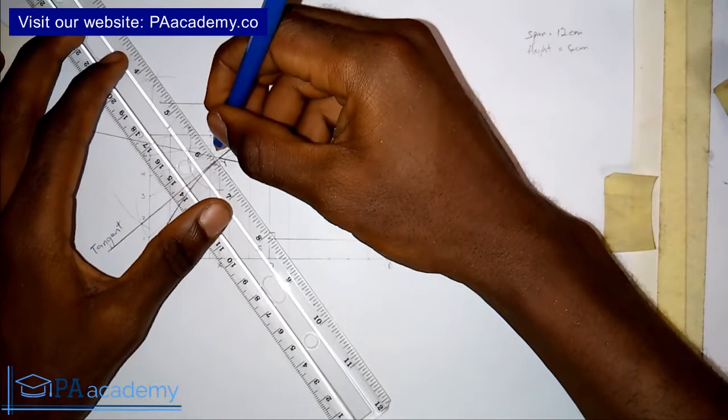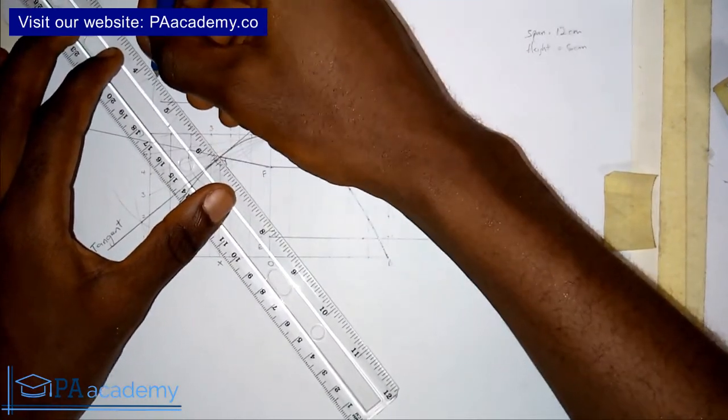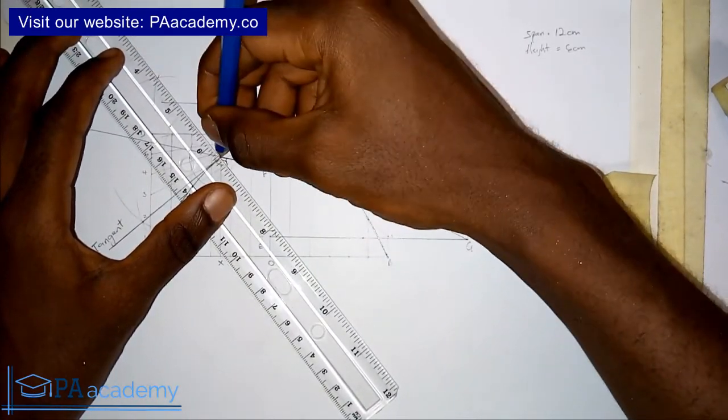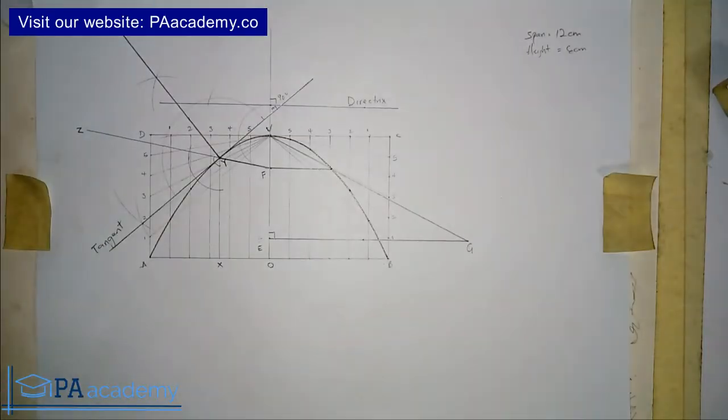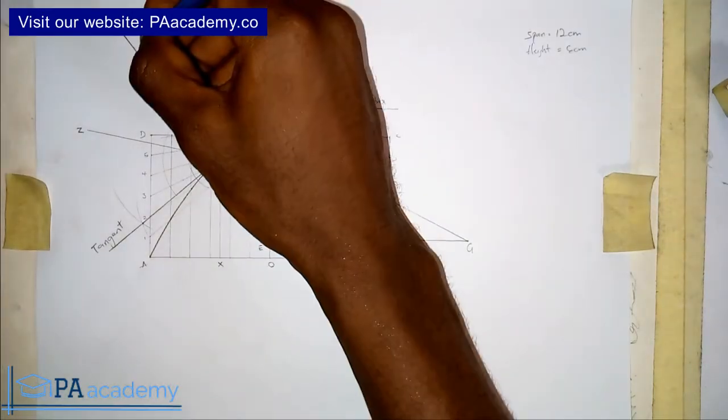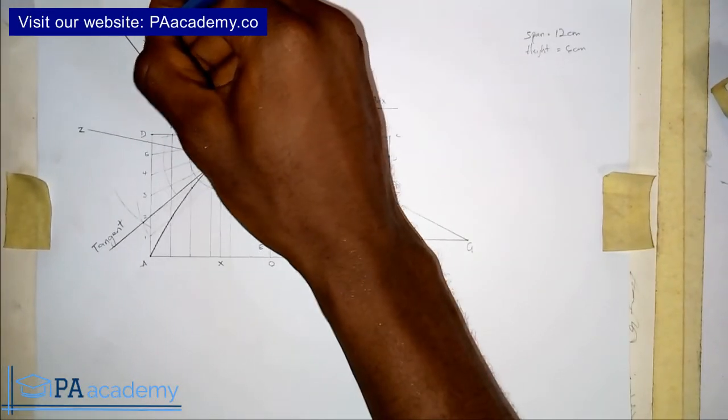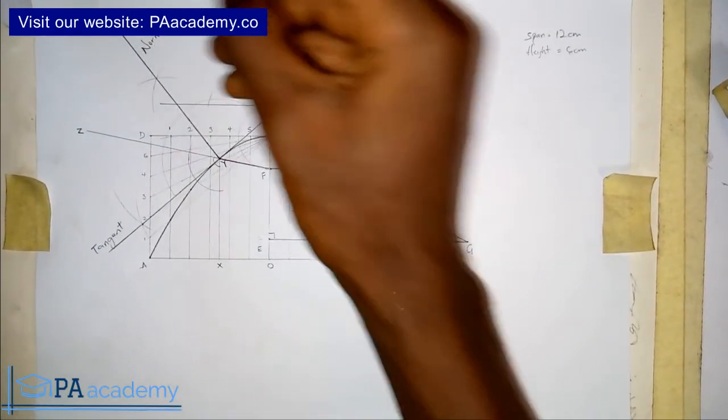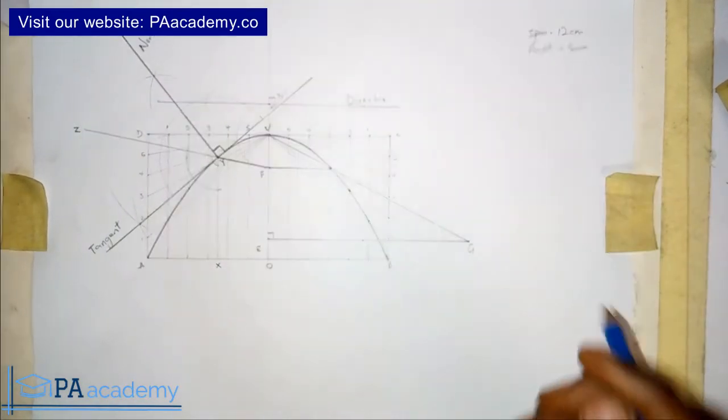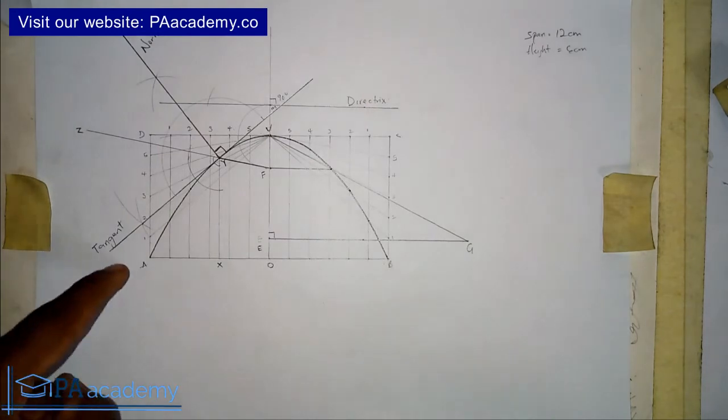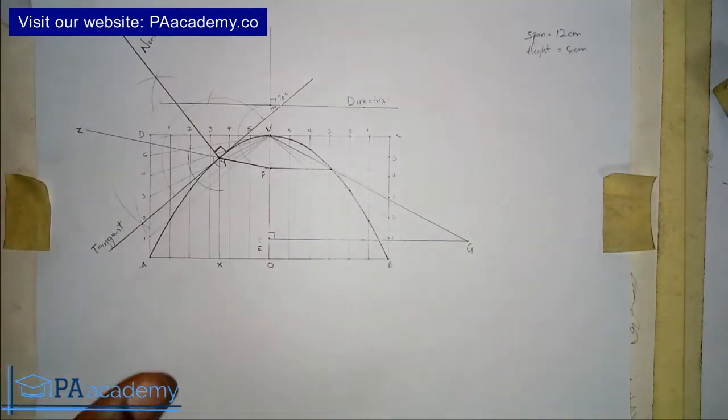I'll join it to Y. So this line that I've just drawn represents the normal, which is at 90 degrees to the tangent. So this is how you draw a tangent and a normal to a parabola.